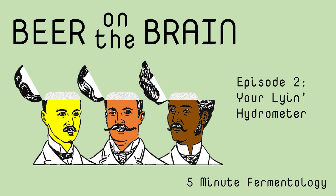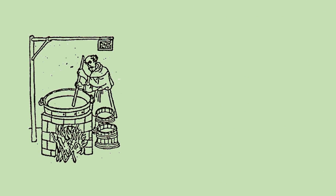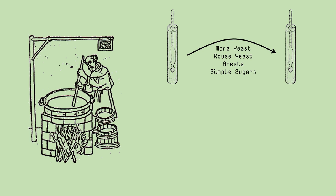Welcome to Beer on the Brain, episode two: your lying hydrometer. We've all been there — you're trying to brew some high-strength beer, maybe a barley wine, maybe a Belgian dark strong. You spend weeks formulating your recipe, go through a long brew day boiling to hit your target gravity, pitch a huge healthy yeast with plenty of oxygen, and come back a few weeks later only to find your gravity is way too high. You try to unstick your fermentation — add more yeast, rouse it, aerate, add nutrient — but no matter what you do, your hydrometer just won't budge.